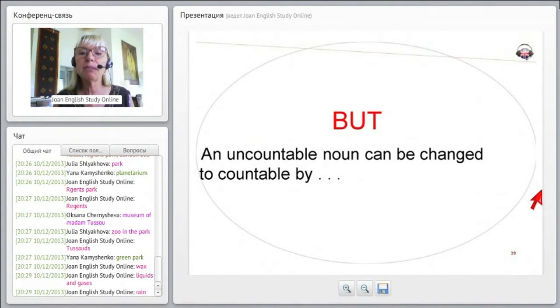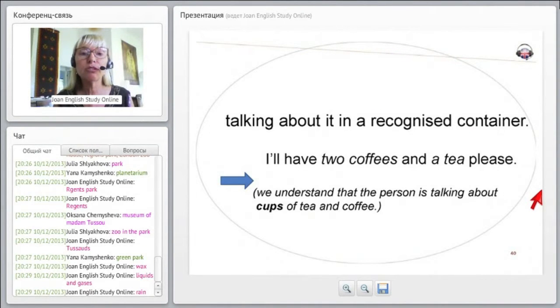But an uncountable noun can be changed to countable, and how can we make it countable? By talking about it in a recognized container. I'll have two coffees and a tea, please.